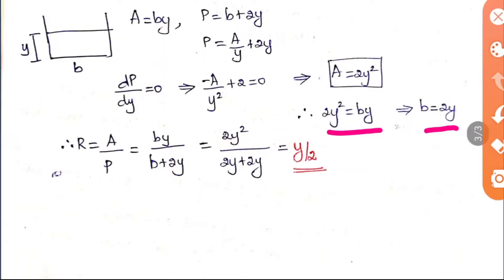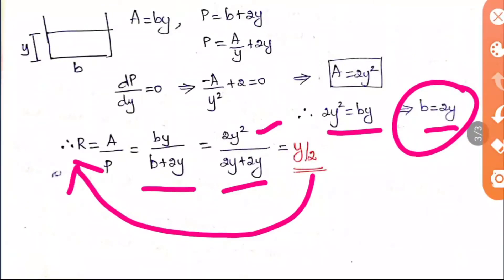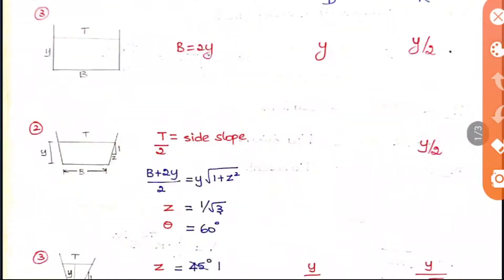Since we already have a equals by and now a equals 2y², equating both gives b equals 2y. Going back to the basic r equation: r equals by divided by b plus 2y. Substituting gives 2y² divided by 4y, which equals y/2. So for a rectangular section, r equals y/2, depth d equals y, and b equals 2y.